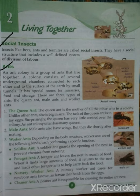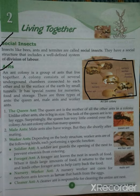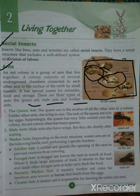An ant's colony is a group of ants that live together. A colony consists of several underground chambers connected to each other and to the surface of the earth by small tunnels. You can see the colony of the ant — these are the chambers, and these are the tunnels which connect one chamber to another. It has special rooms for nurseries and food storage. There are three types of ants: the queen ant, male ants, and worker ants.